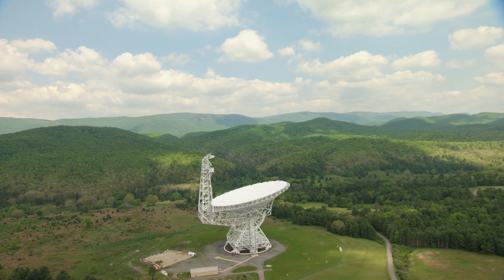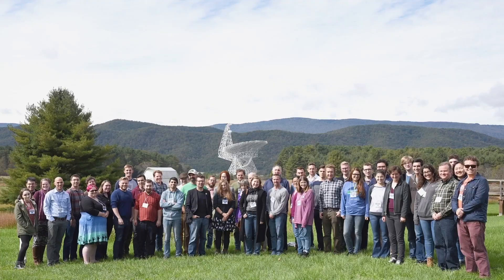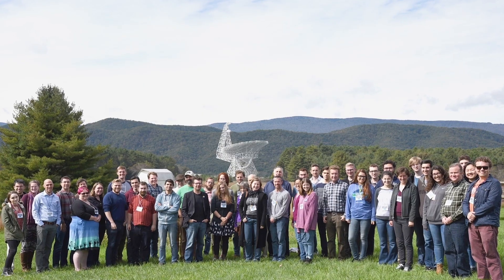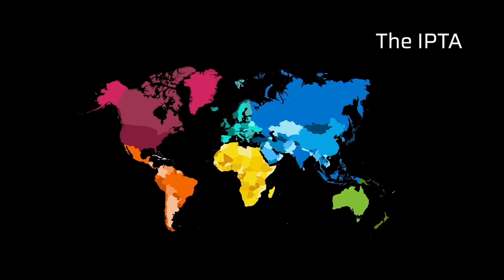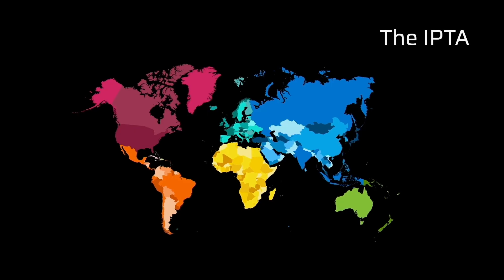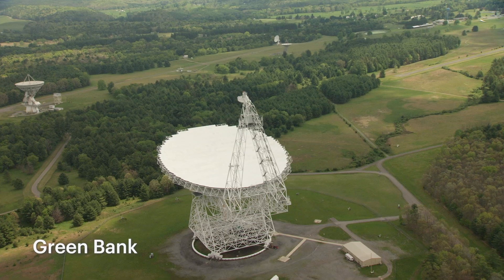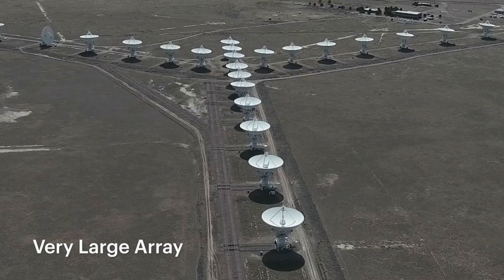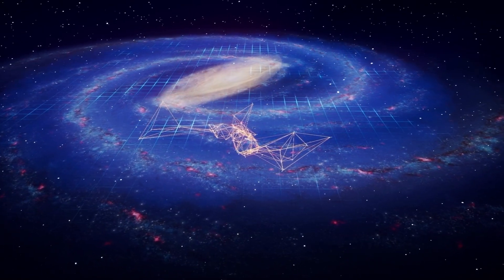In June 2023, Nanograv, or the North American Nanohertz Observatory for Gravitational Waves, and the International Pulsar Timing Array Consortium, or IPTA, using data from several radio telescopes, made this groundbreaking discovery. We harnessed a collection of astronomical objects in our neighborhood of the Milky Way to act as one big gravitational wave antenna.